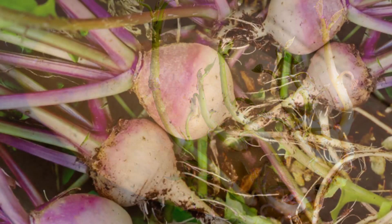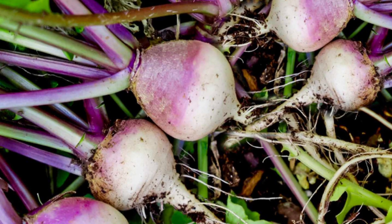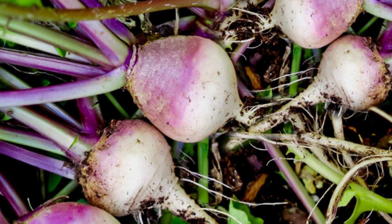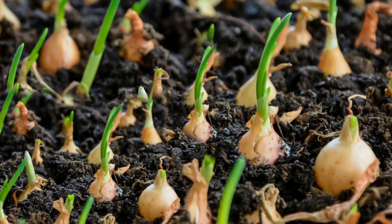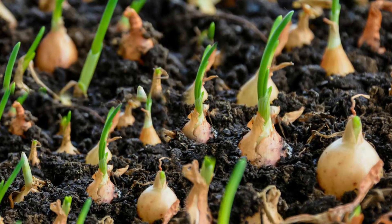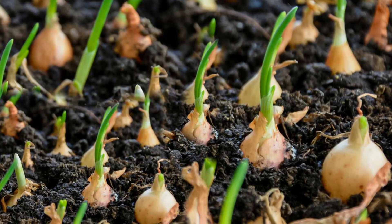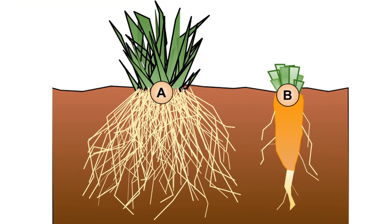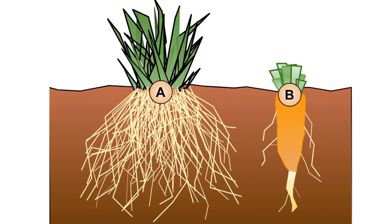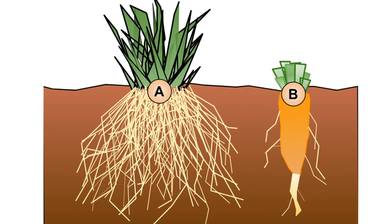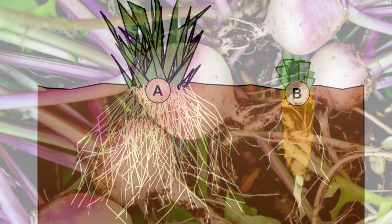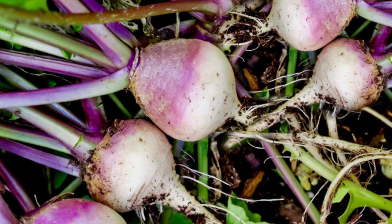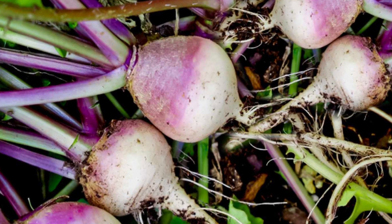Onion and ginger are also grown from underground stems. Underground stems means these stems grow under the soil. We can also grow them from stem cutting. If we cut onion or ginger in this manner and grow them, they can grow into new plants.